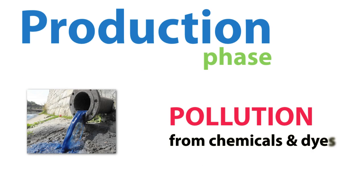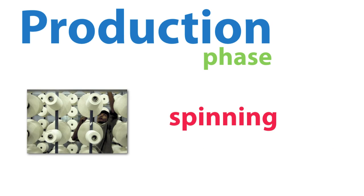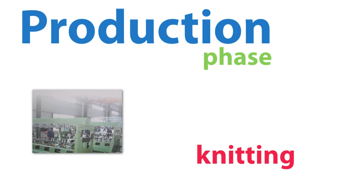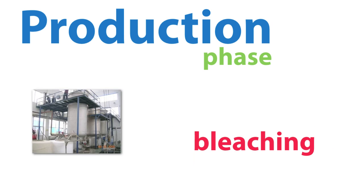In the production phase, pollution comes from chemicals and dyes — from spinning, knitting, bleaching, dyeing, cutting, and sewing.